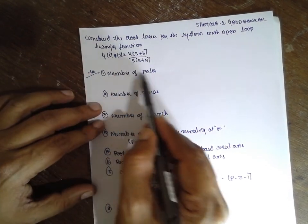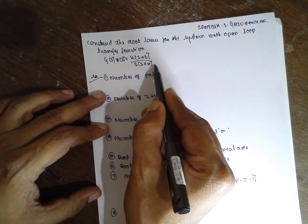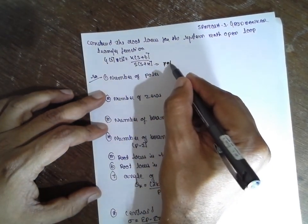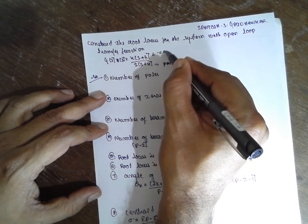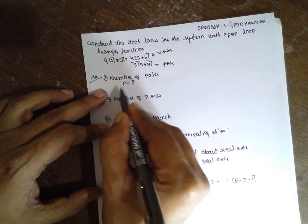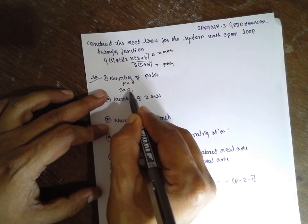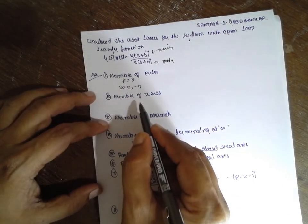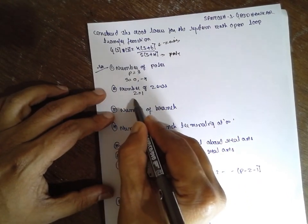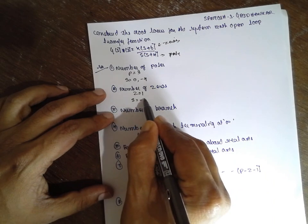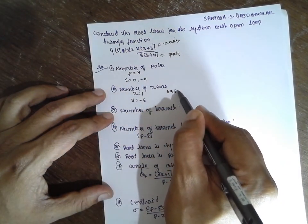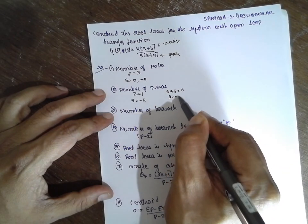Now, number of poles - these indicate poles, this is nothing but zeros. Number of poles here is 3: p equals 3, s equals 0 and minus 4. Next, number of zeros: z equals 1 and s equals minus 6. That means if it is plus 6 equals 0, s is nothing but minus 6.